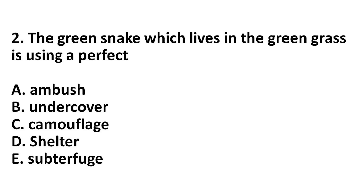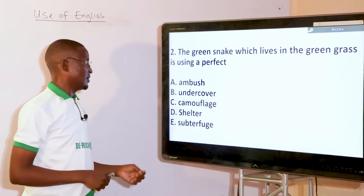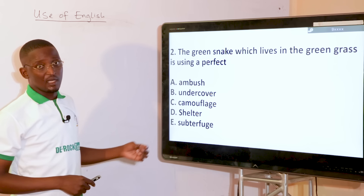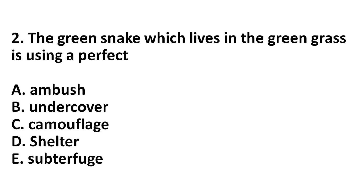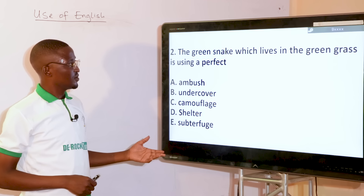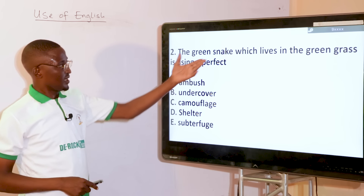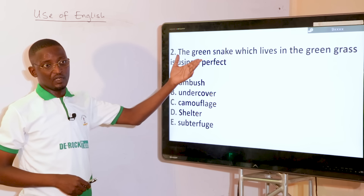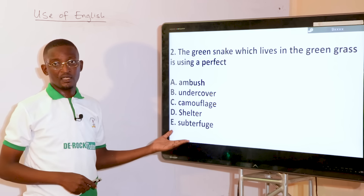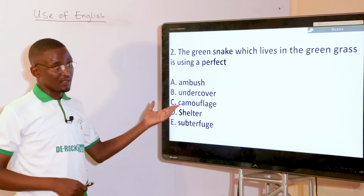The green snake which lives in the green grass is using a perfect dash. The options include ambush, undercover, camouflage, shelter, and subterfuge. Having a green snake under green grass, that is a perfect camouflage — it won't be obvious the snake is there. So you choose the word camouflage.